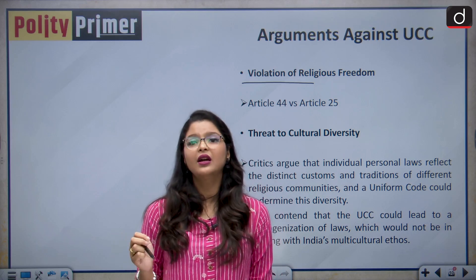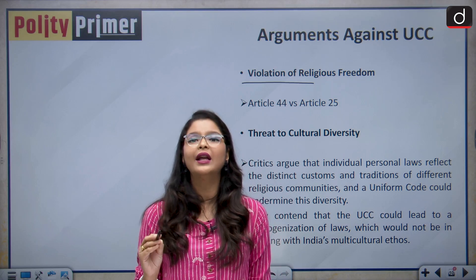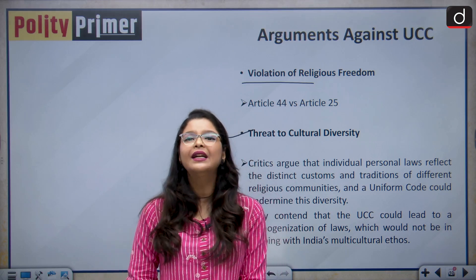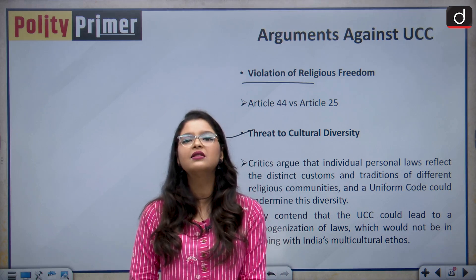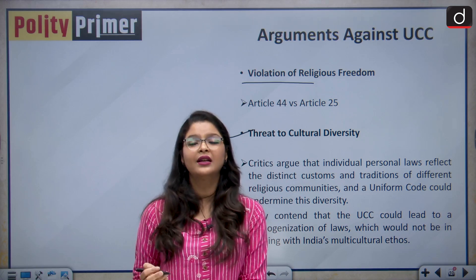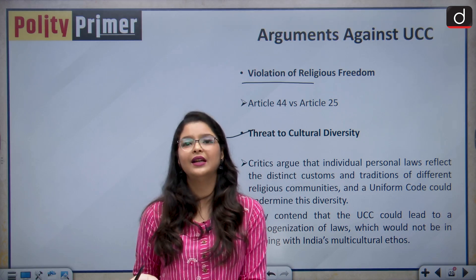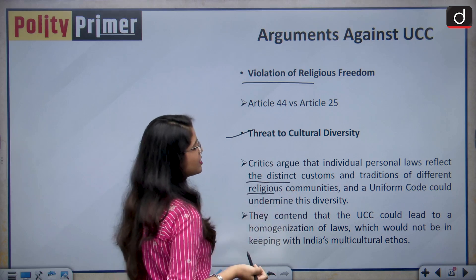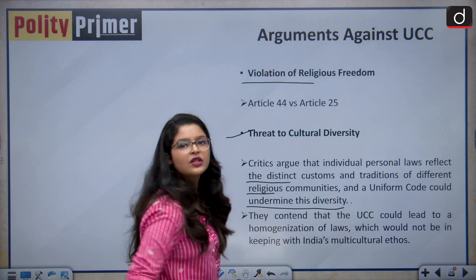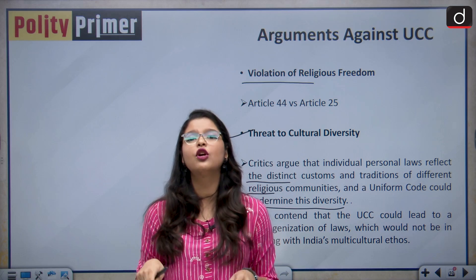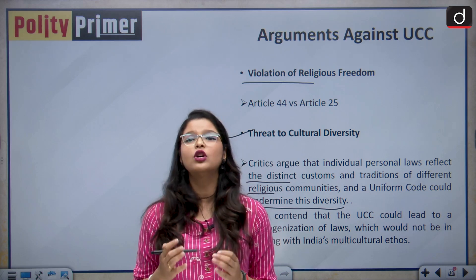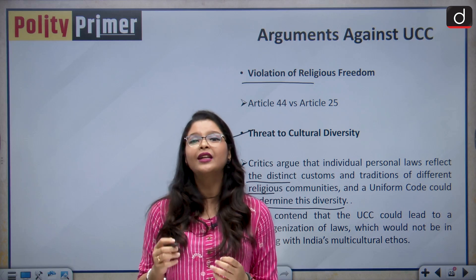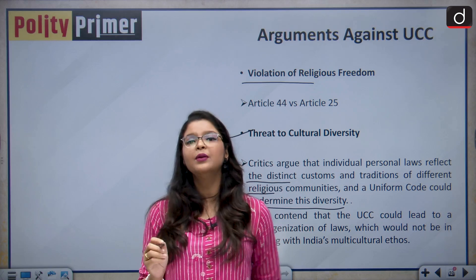In fact, Article 44 will enforce Article 14 that gives us the right to equality in the true sense. Another argument against UCC is the threat to cultural diversity. India boasts of unity in diversity, and one of the main arguments against UCC is that it is a threat to cultural diversity and the values of pluralism in India. Critics argue that individual personal laws reflect the distinct customs and traditions of different religious communities and that the Uniform Civil Code would undermine this diversity. They also argue that it will lead to homogenization of all laws, but these are all assumptions. In fact, UCC is very important to end the variations in personal laws.